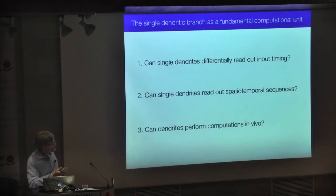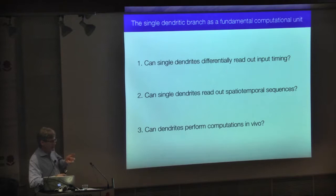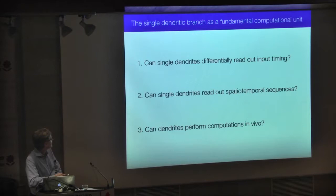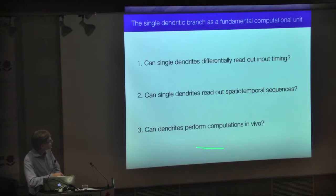In today's talk I'm going to present three pieces of evidence that dendrites can do interesting computational tasks relevant to behavior. First, I'll tell you how dendrites might be able to read out the timing of synaptic inputs. Then I'll show how dendrites might read out spatiotemporal sequences and discriminate different patterns. Finally, I'll show how some of these active dendritic mechanisms might be useful in vivo for a behaviorally relevant computational task.